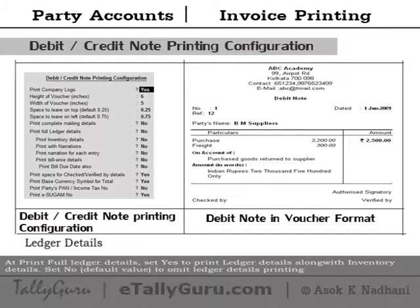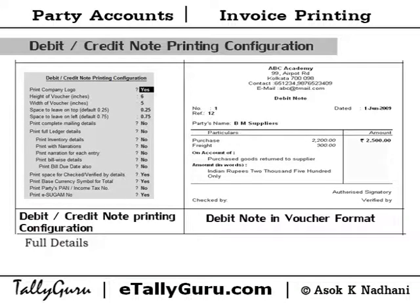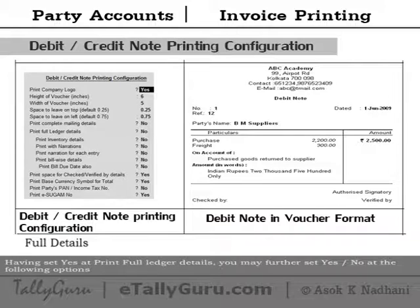For laser details, at 'Print full laser details' set yes to print laser details along with inventory details, or set no to omit laser details printing. When 'Print full details' is set to yes, you may further set yes or no for the following options.